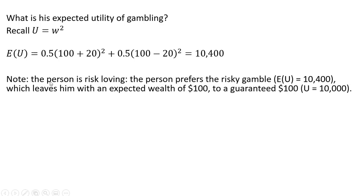You'll note here that the person is risk loving — the person prefers the risky gamble. The expected utility is $10,400, which comes from an expected wealth of $100 from gambling, compared to a guaranteed $100 which gives a utility of only $10,000.